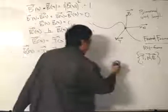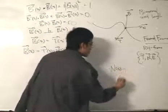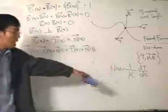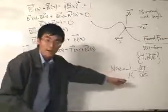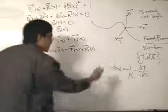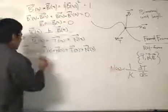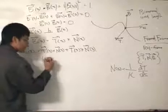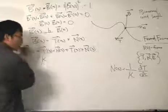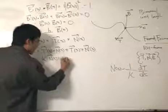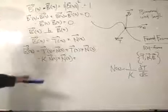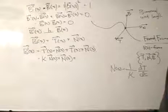Now we interpret this using previous definitions. We know the unit normal vector is defined as N = (1/κ)(dT/ds), which means dT/ds = κN. Substituting this into our expression, the first term becomes κN × N. Since κ is a scalar, we have κ(N × N) plus T × dN/ds. We now leave the second term as is — you'll see why in a moment.